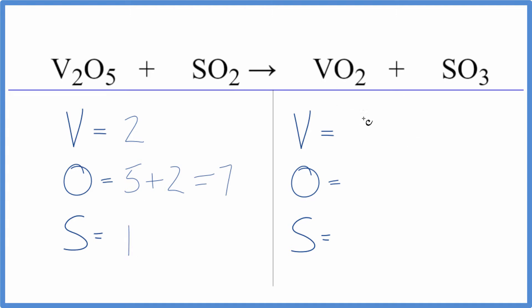Product side, we have the 1 vanadium, 2 oxygens, plus we have these 3, so we have 5, and then we have 1 sulfur.